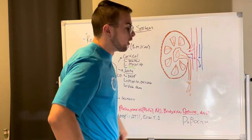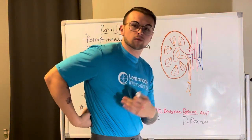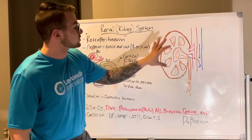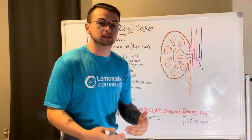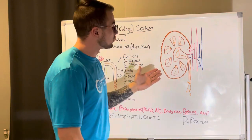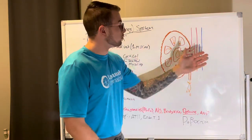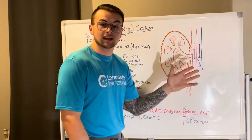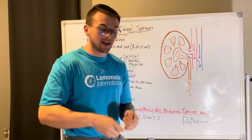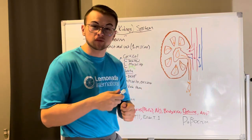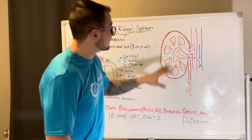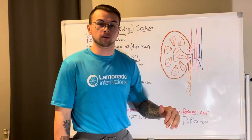The retroperitoneum is basically that area in our lower back, about at that costovertebral angle we talked about earlier. So this is our kidney. We have blood that comes into the kidney and blood that goes out. The blood comes in, it's processed and worked on until urine is formed.